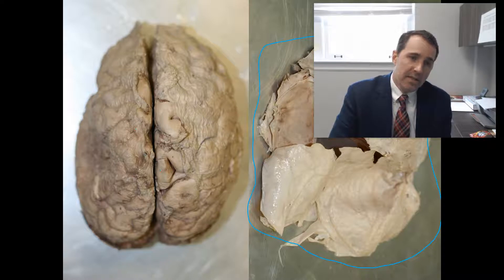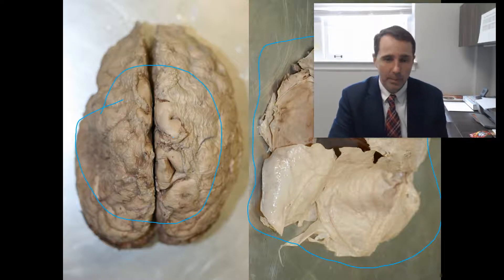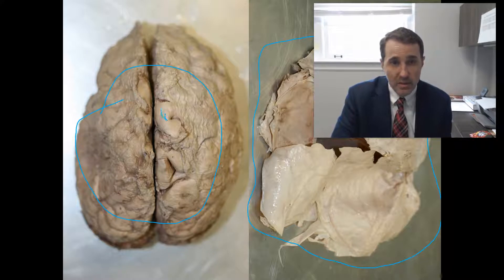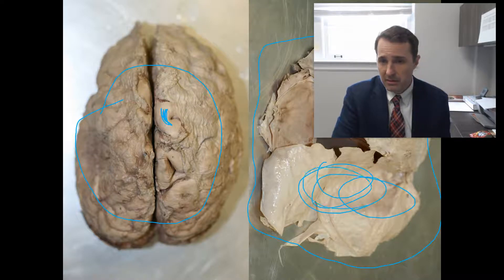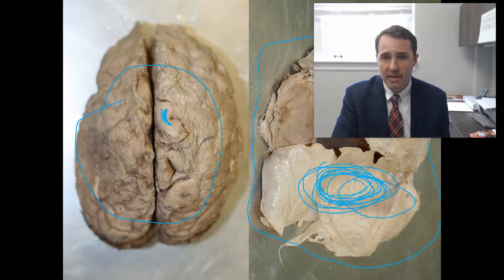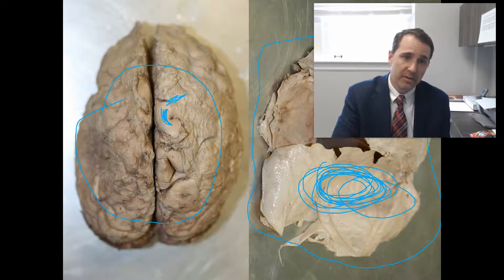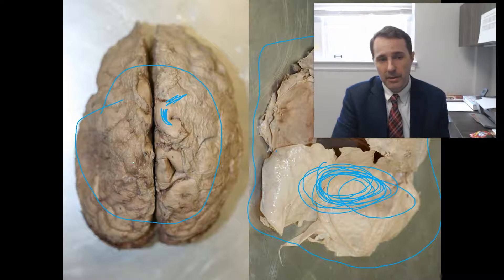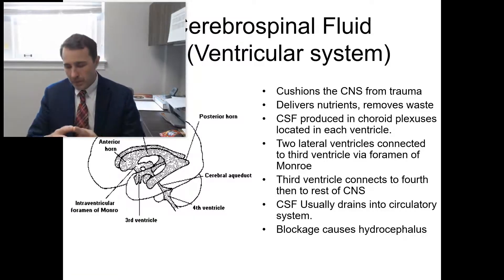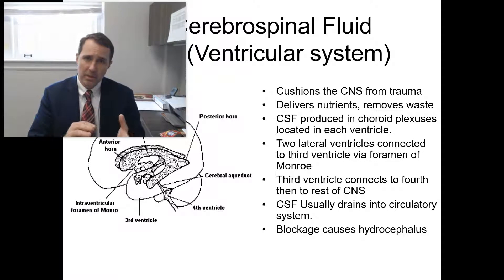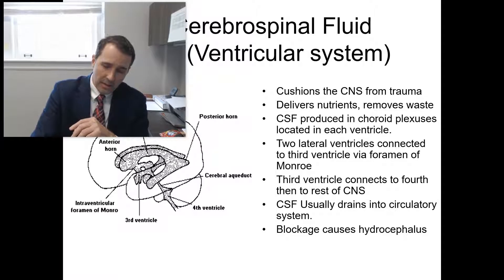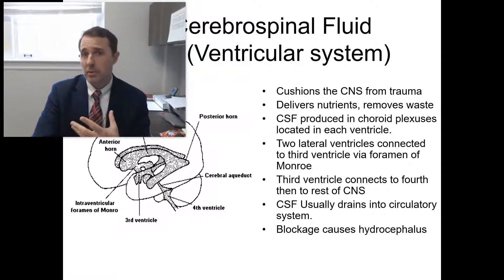On this brain, you can see what's left of the arachnoid mater and the pia — it's hard to tell them apart in this image, but here you can see the cortex on the surface of the brain, and the dura mater has been removed. Deep within the brain, you have a system known as the cerebrospinal fluid system.